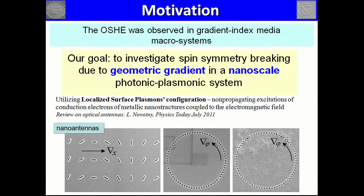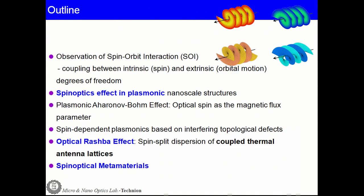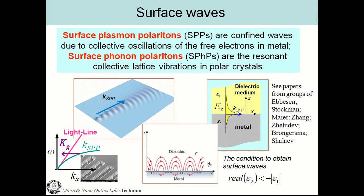I discussed optical spin-orbit interaction. I would like to talk about spin-optics effects in plasmonics at the nanoscale: the plasmonic Aharonov-Bohm effect, spin-dependent plasmonics based on interfering of topological defects, the optical Rashba effect in spontaneous emission and specifically thermal emission, and finally our recent investigation of spin-optical metamaterials. In order to observe the optical spin Hall effect or spin-orbit interaction, we utilize surface waves, which are evanescent waves.